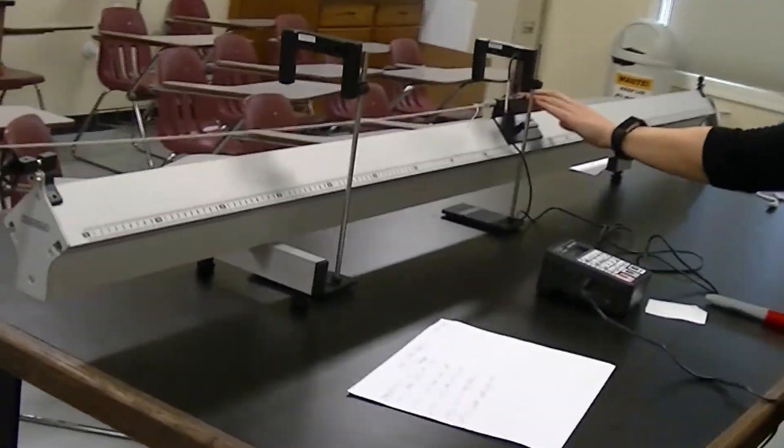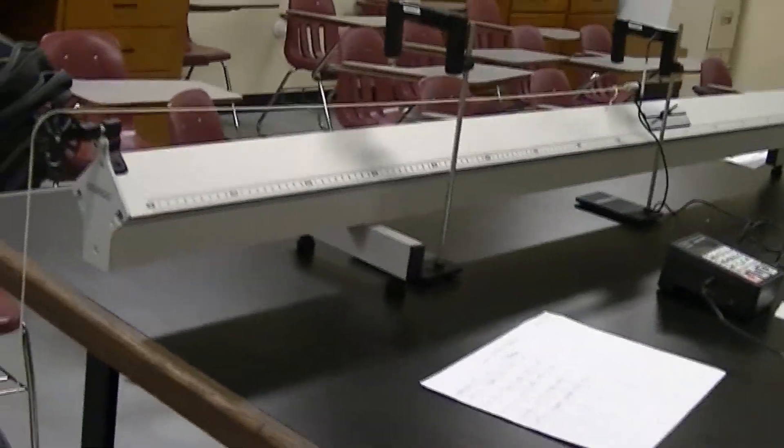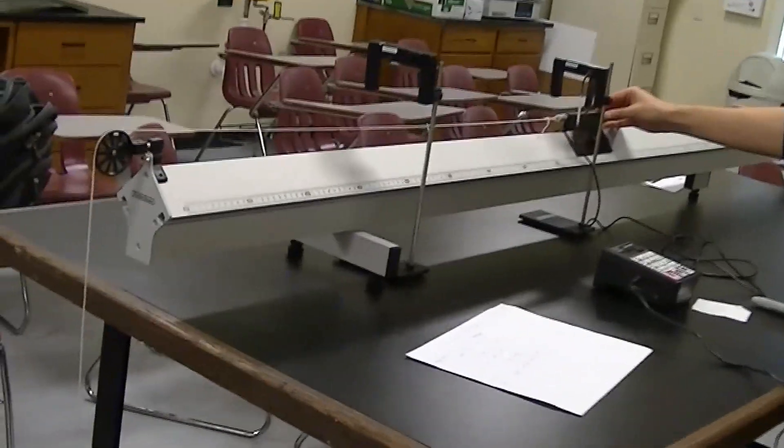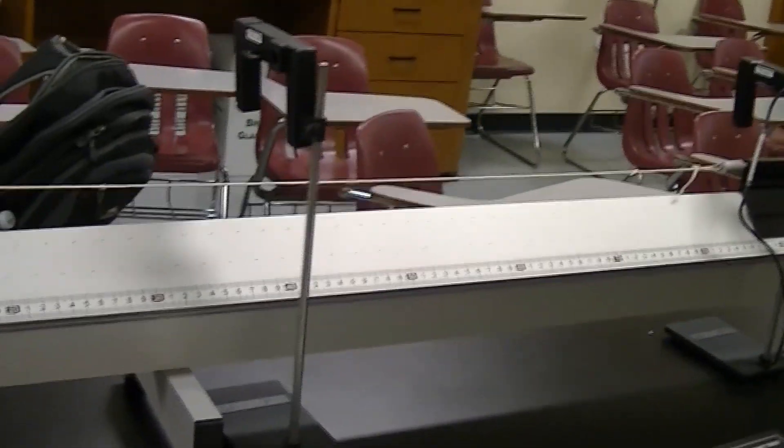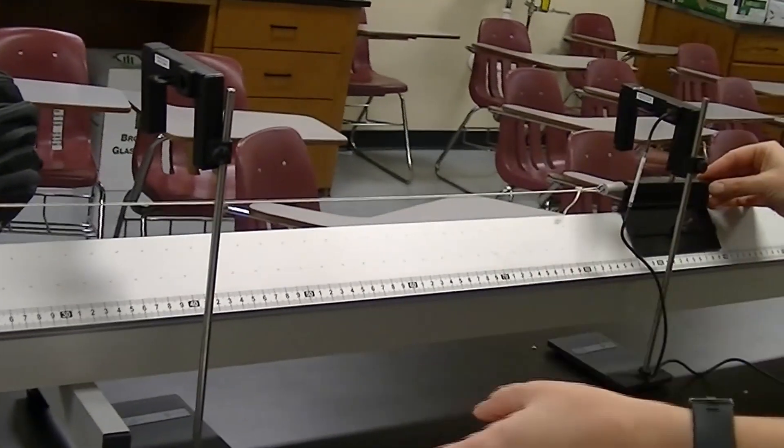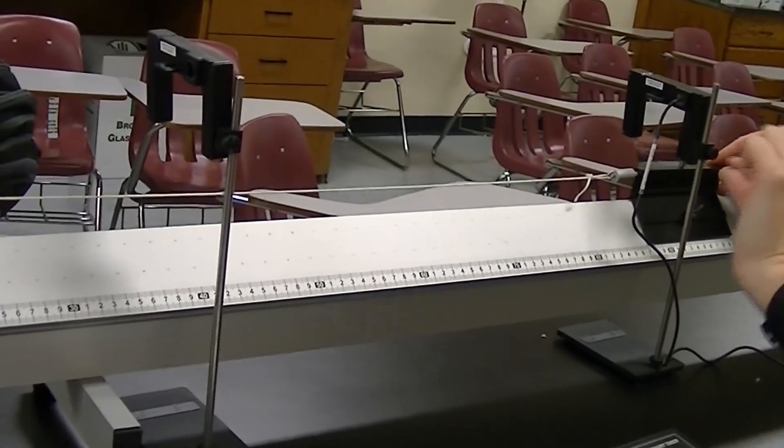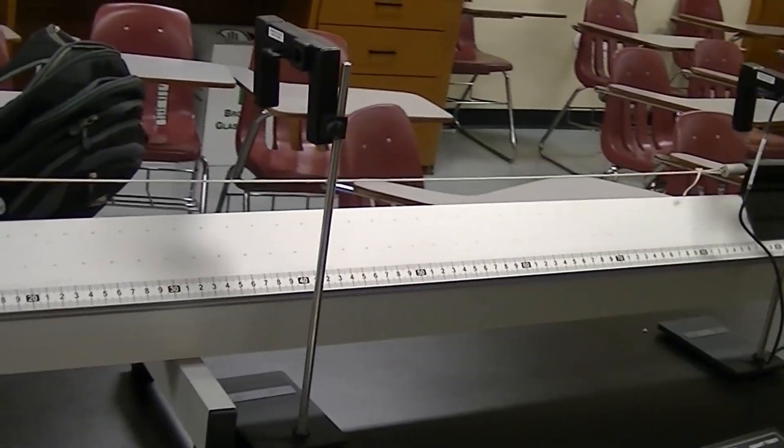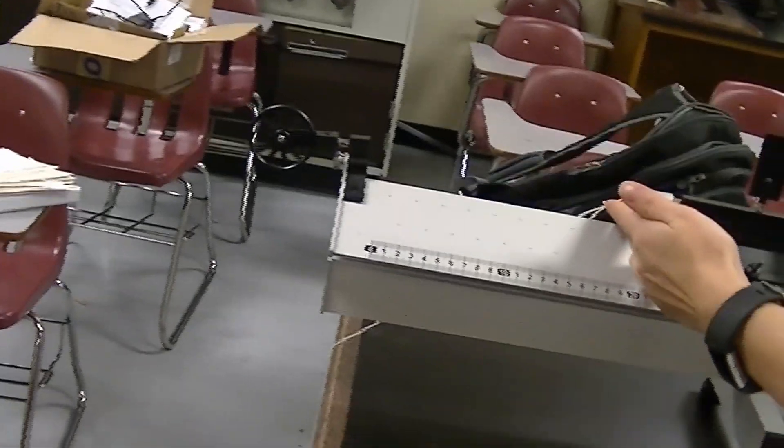So I'm going to go ahead and turn on the air. I want the glider as close to the first gate as possible before I let it go. When I let it go, since there's no friction anymore, that force on that hanging mass is going to pull the glider through both gates. So the timer starts when it goes through the first gate, and it stops when it goes through the second gate.